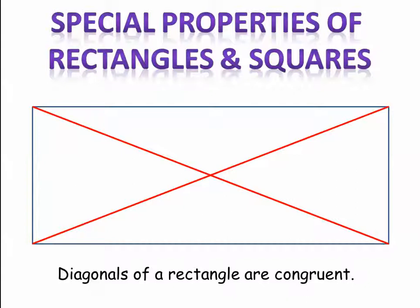What I want to tell you about the rectangle is that the diagonals are congruent. So not only do they bisect each other, they're congruent. That means that every one of these segments is going to be the same length.